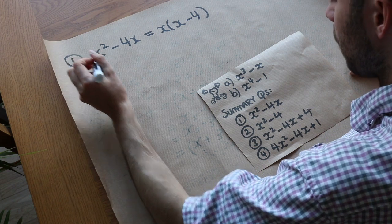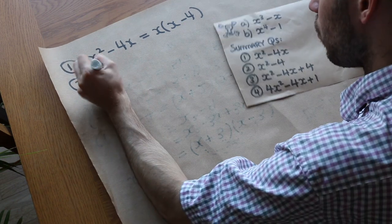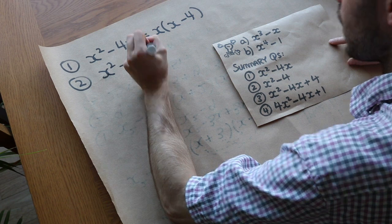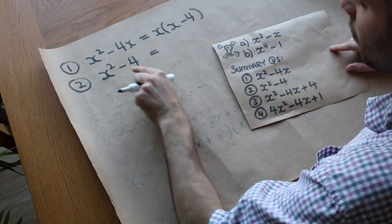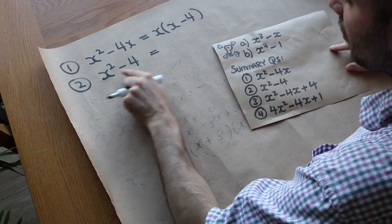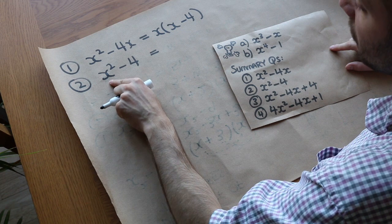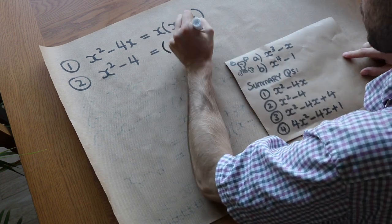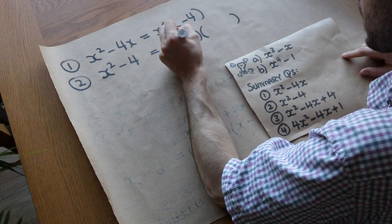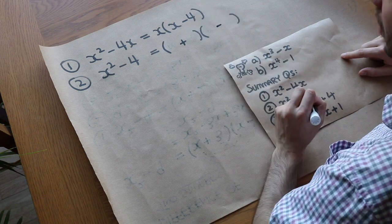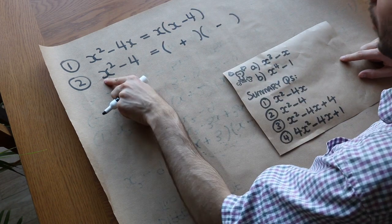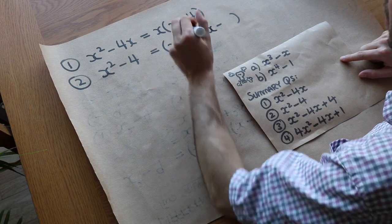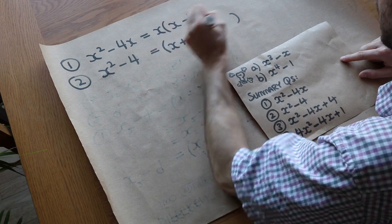Second: x squared minus 4. This time it is the difference of two squares — x squared is a squared thing, and 4 is a square number. Using two brackets with plus and minus: the square root of x squared is x, and the square root of 4 is 2, giving (x + 2)(x − 2).